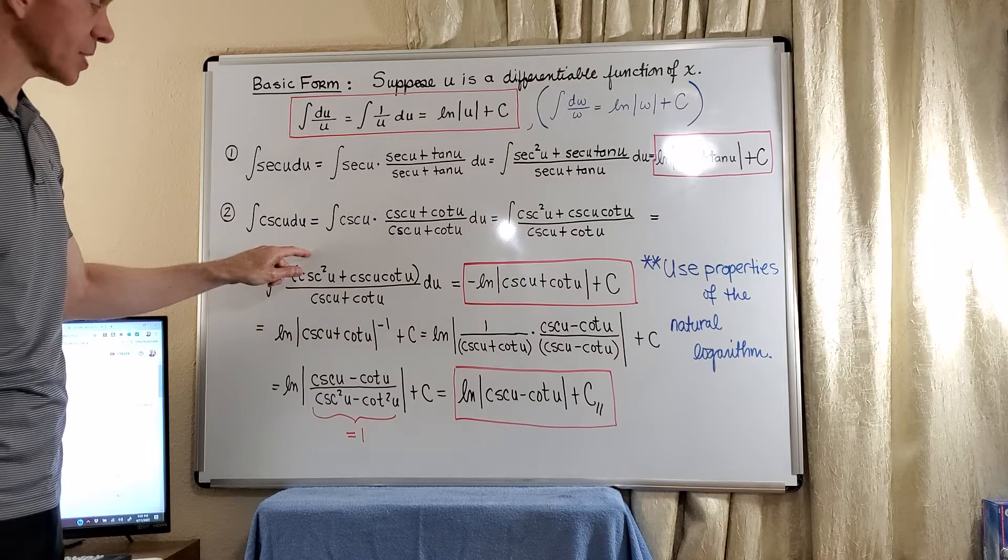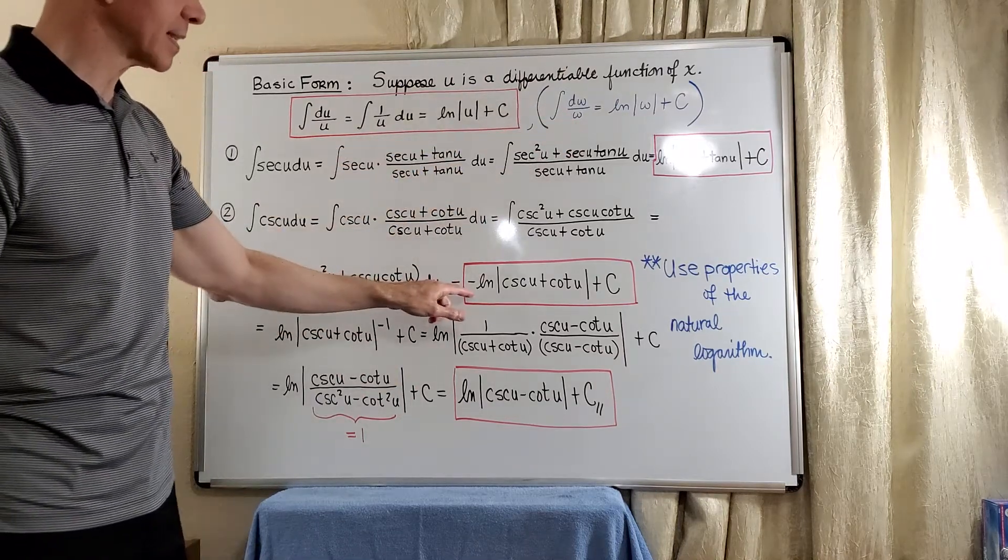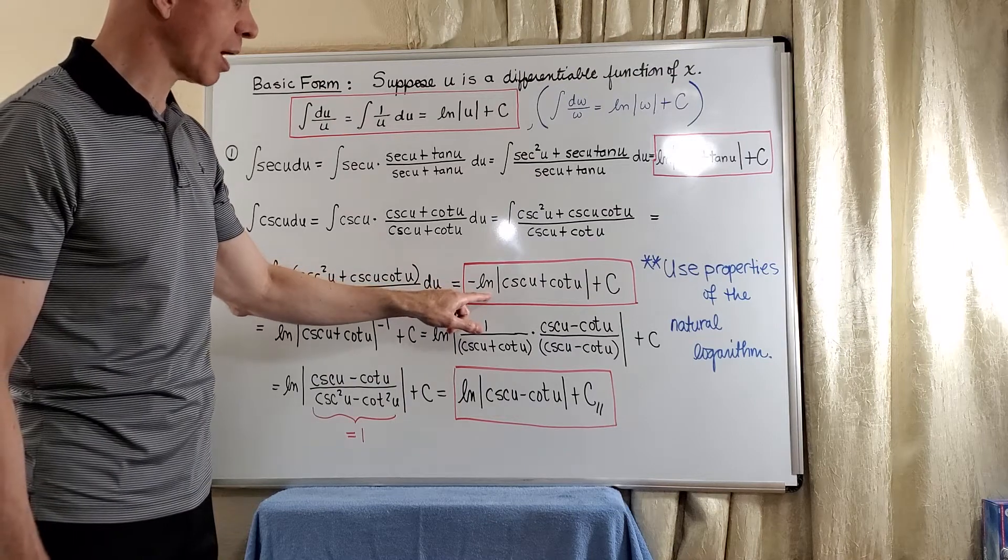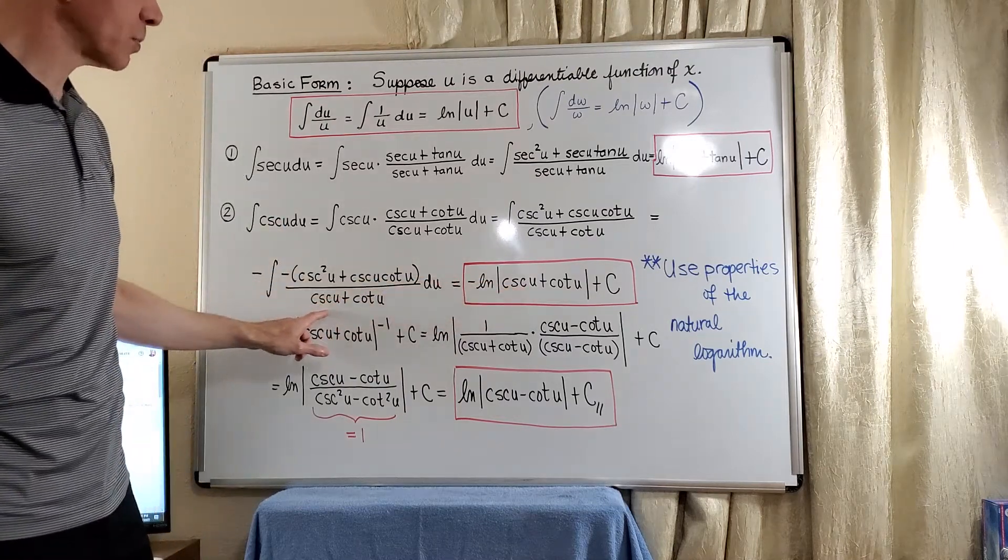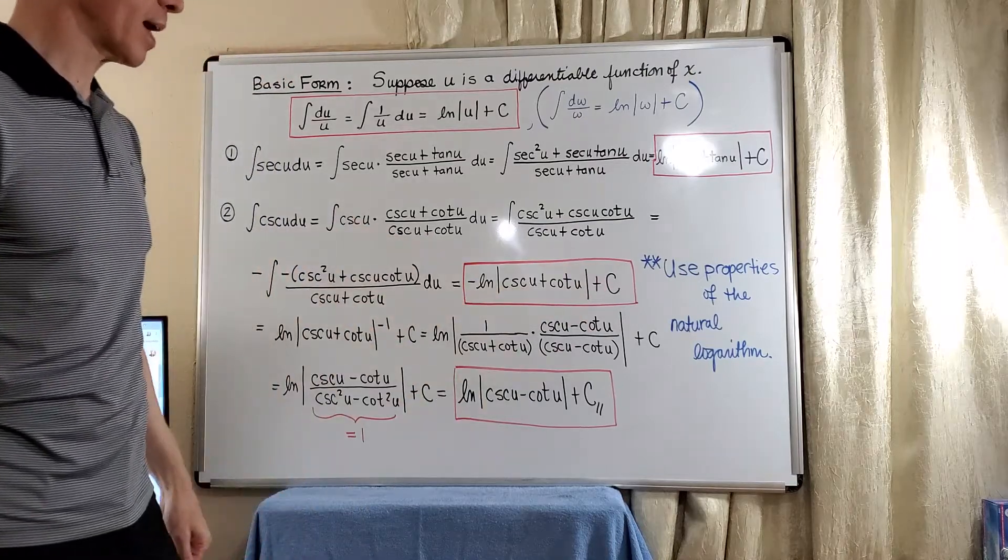We have the w downstairs and the dw upstairs. We have exactly this. So we get the negative of the natural log of the absolute value of cosecant u plus cotangent u plus an arbitrary constant.